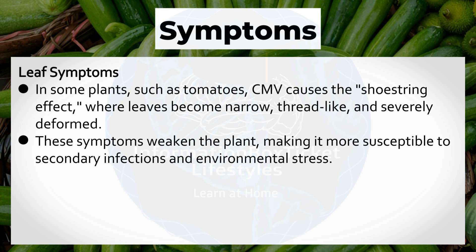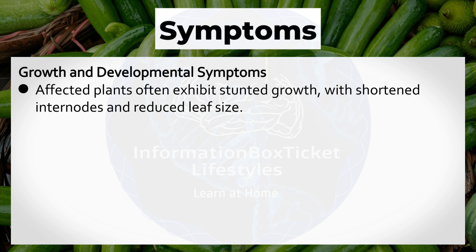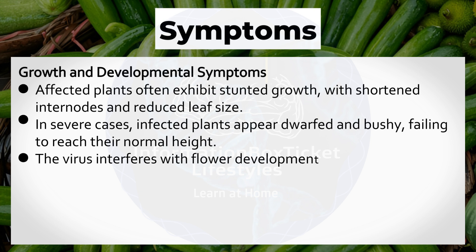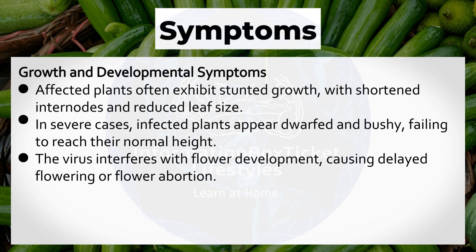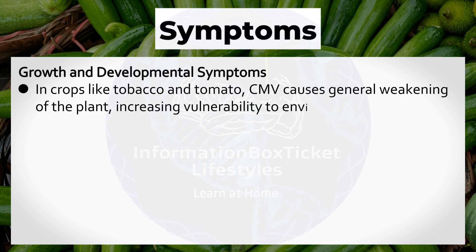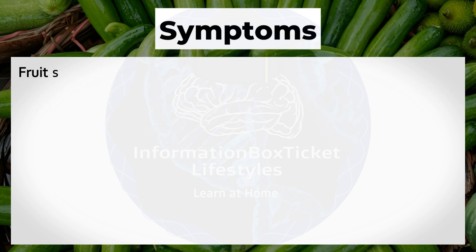Growth and Developmental Symptoms: Affected plants often exhibit stunted growth, with shortened internodes and reduced leaf size. In severe cases, infected plants appear dwarfed and bushy, failing to reach their normal height. The virus interferes with flower development, causing delayed flowering or flower abortion. This disruption reduces the plant's ability to set fruit, directly impacting yield. In crops like tobacco and tomato, CMV causes general weakening of the plant, increasing vulnerability to environmental stressors such as drought or nutrient deficiencies.